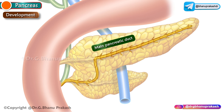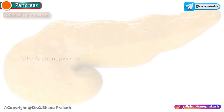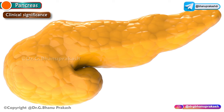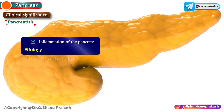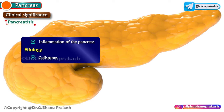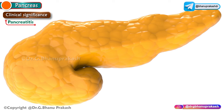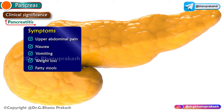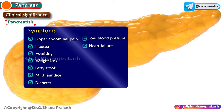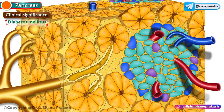An important clinical condition associated with the pancreas is pancreatitis — inflammation of the pancreas. The etiology is mainly due to gallstones and alcohol consumption. Symptoms include upper abdominal (epigastric) pain which may be severe, constant, and may radiate to the back, along with nausea, vomiting, weight loss, fatty stools, mild jaundice, diabetes, low BP, heart failure, and kidney failure.